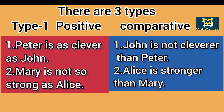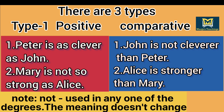There are three types of degrees of comparison. In type 1, comparison is done between one with another, so there is no possibility of superlative degree. Example 1: 'Peter is as clever as John.' Comparative: 'John is not cleverer than Peter.' Example 2: 'Mary is not so strong as Alice.' Comparative: 'Alice is stronger than Mary.' Note that 'not' is used in any one of the degrees — either positive or comparative — so that the meaning doesn't change. This is applicable only in type 1.